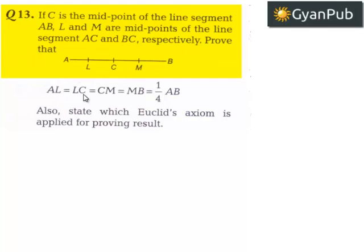Prove that AL is equal to LC is equal to CM is equal to MB is equal to one fourth of AB. Also state which Euclid's axiom is applied for proving the result.